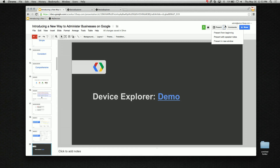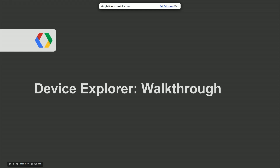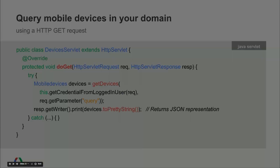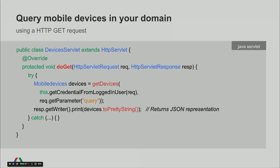Let's walk through the code that made that application possible. It's a very common MVC setup — servlets act as controllers, index.html is the view, and the servlets talk to the client library. The data model is completely represented by the Directory API; there's no local data model. With just four lines of code, I'm able to get a list of devices within the domain and print them to the screen.